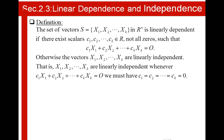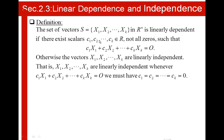We will start with a few definitions: the definition of linearly dependent and independent vectors. The set of vectors S, which contains X1, X2 to XK in Rn, is linearly dependent if there exist scalars C1, C2 to CK that belong to R, the set of real numbers, not all zeros,